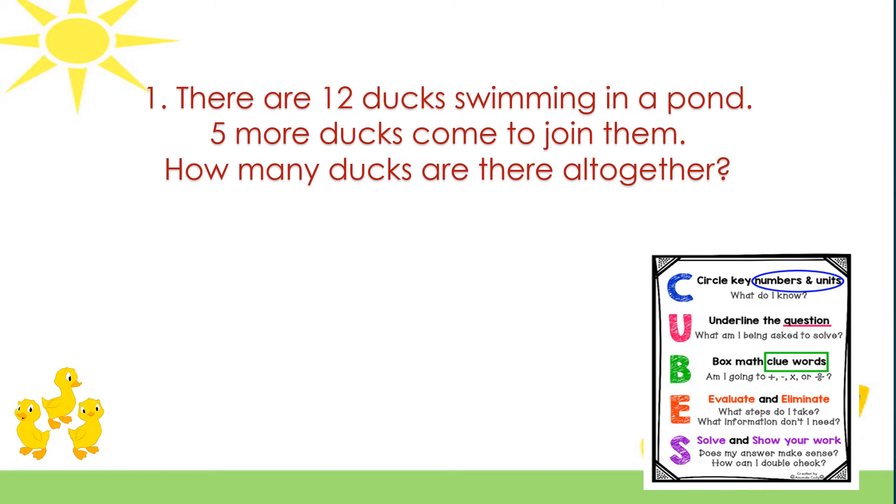Now the first step of CUBES that helps us solve word problems tells us that we must circle the numbers. So our numbers in our word problem that we're going to circle are 12 and 5. U tells us to underline the question, and so the question says, how many ducks are there all together?